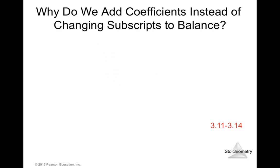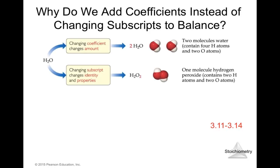Why do we add coefficients instead of changing subscripts to balance? If we change coefficients, we change the amount of that compound — for example, from one to two molecules of water. If you change a subscript and add a two for oxygen, you change the whole molecule into a new compound with new identity and properties — that becomes hydrogen peroxide, which is totally different. So always add coefficients in front of the molecule; never change the subscript.